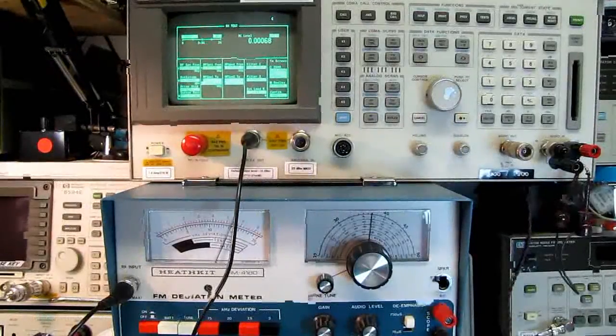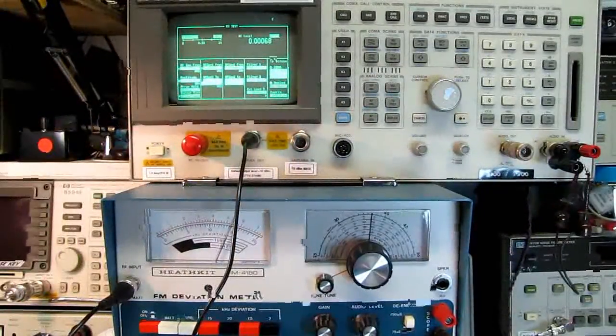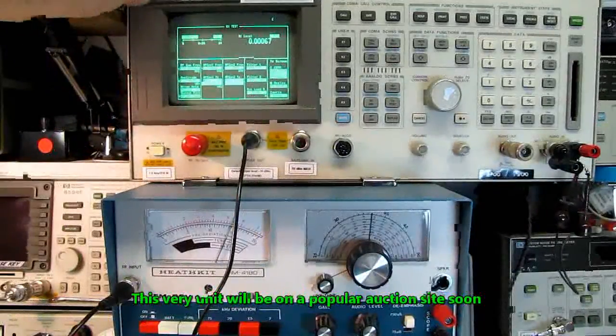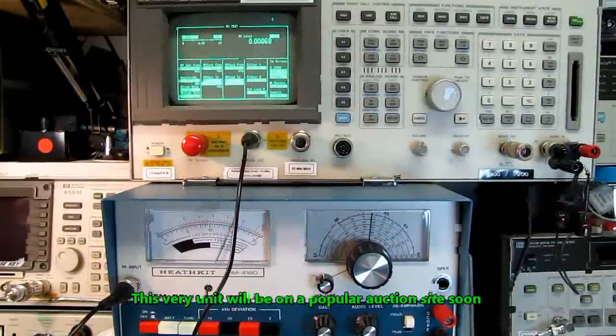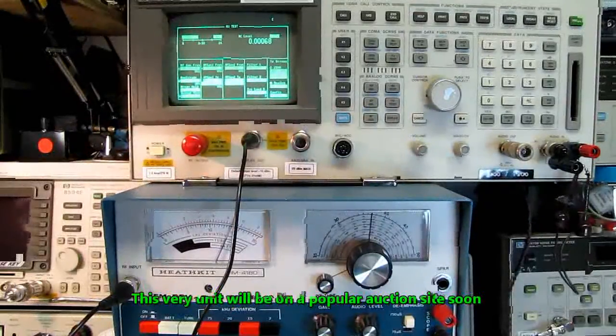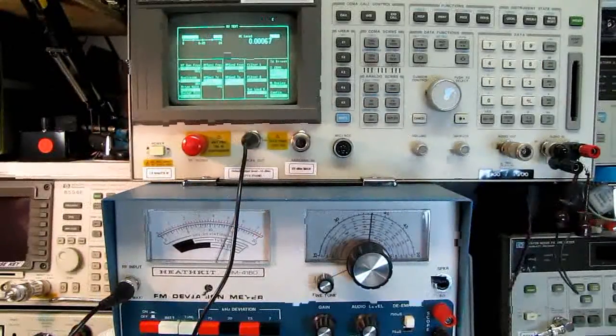So if your repeater club needs a deviation meter and you come across one of these for 100 bucks instead of one of these for 1,000, grab it. It's useful. It does work. The equipment snobs can go stuff their head in the sand. I don't care. See ya.